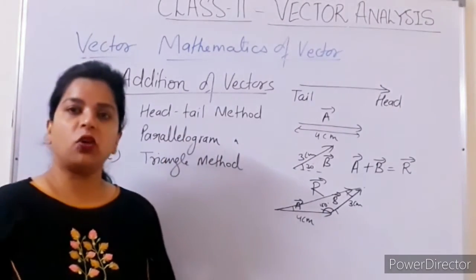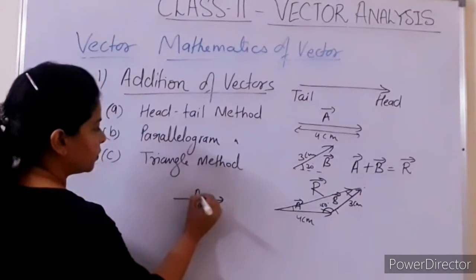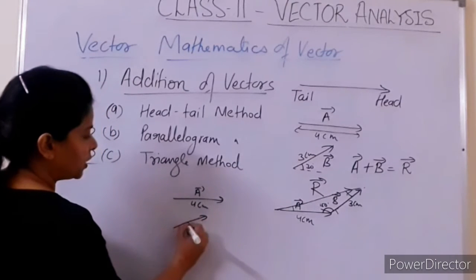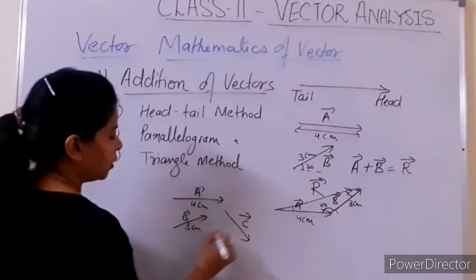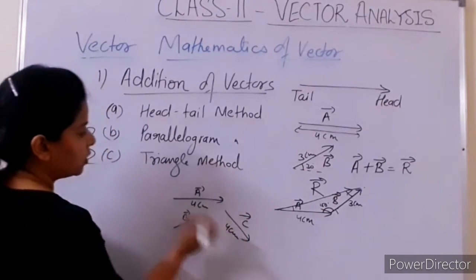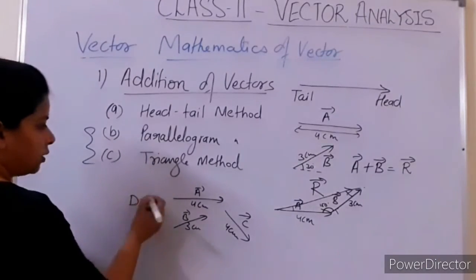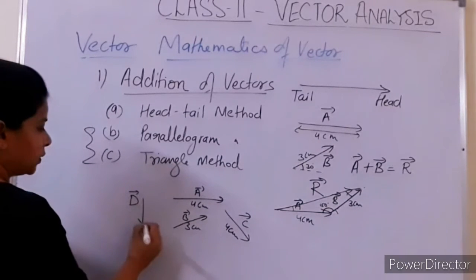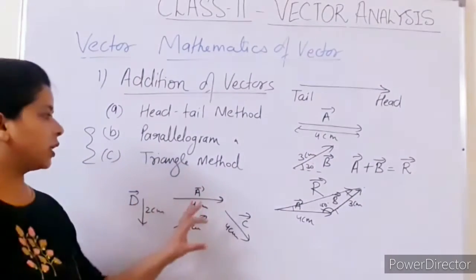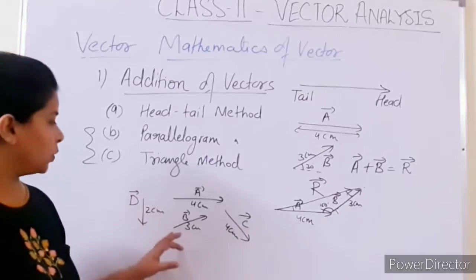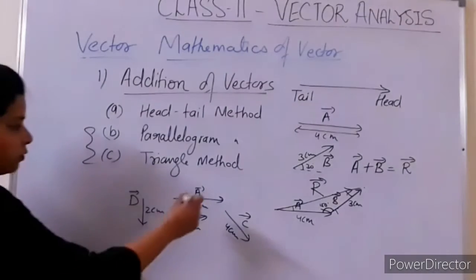This head-tail method is also applied as the law of polygon. For example, with four vectors — A of 4 cm, B of 3 cm, C of 4 cm, and D of 2 cm — since there are so many sides, we can take them corresponding to the addition, and that is why it is called the law of polygon. If we want to calculate A plus B plus C plus D equals R, we place them head to tail in sequence.